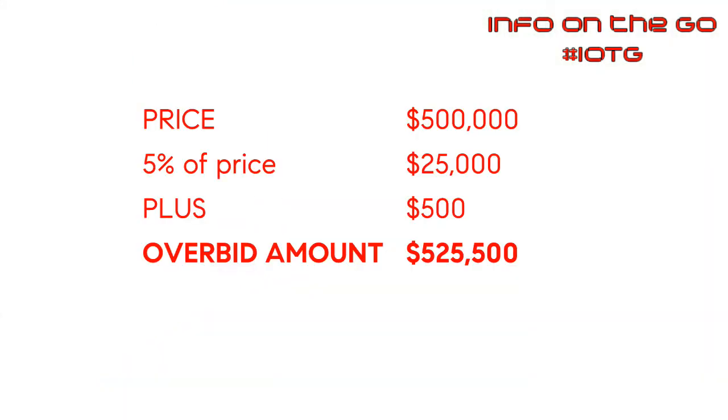That gives you the next overbid amount — in this case, $525,500. Here's a more simplistic way to do it: take the purchase price, multiply it by 5%, and then add another $500. The math works out just the same. So remember: 10% of the first $10,000, plus 5% of the remaining balance equals the overbid amount. If you're a buyer putting in an offer on a probate, you may think you've got it — but you have to go to court, and if anybody else shows up, you're bidding against them. If no one shows up, you get the property.